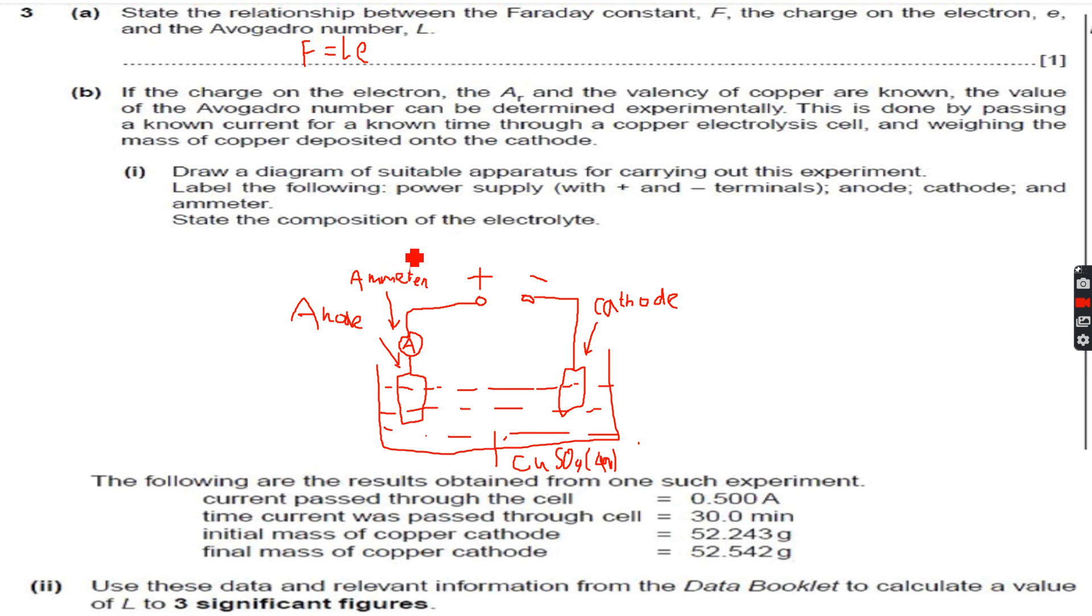Now let's move forward. The following are the results obtained from one such experiment: current passed through the cell 0.5 amperes, time current was passed through cell 30 minutes, initial mass of copper cathode 52.243 grams. This was the mass before the copper started getting deposited on the cathode. Final mass of copper cathode 52.542 grams, so this is the mass after the copper has deposited on the cathode after 30 minutes.